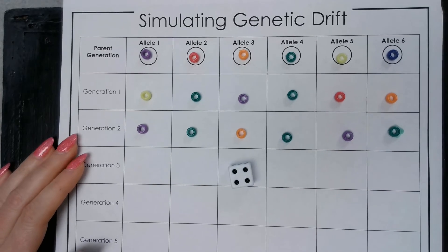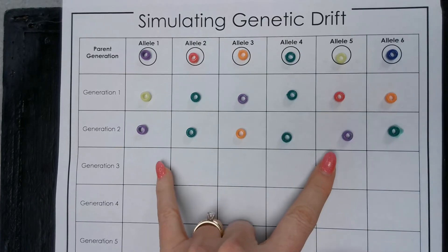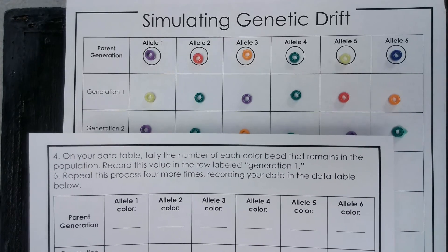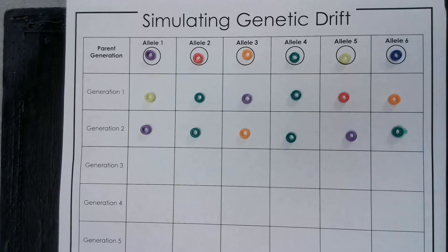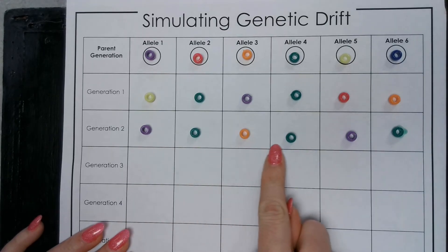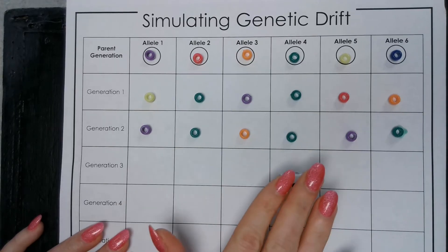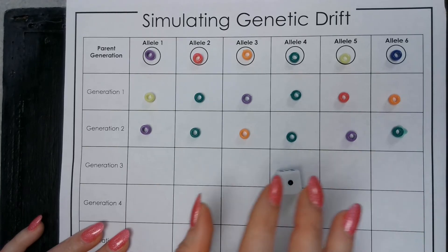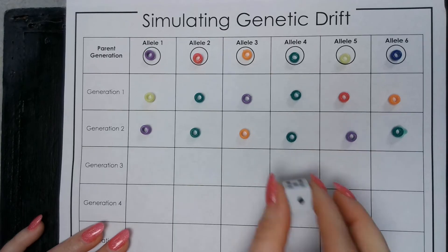We're going to go back to our data table and record this for generation two. Under the purple category, we now have two purple alleles. We have three green beads. Pause the video and fill in your table. In this generation, we wiped out another allele. Rolling the dice represents a random event — it could be a forest fire, a flood, an earthquake — something that has limited our allele population and wiped out a certain allele within the small population. In this case, the pink allele.